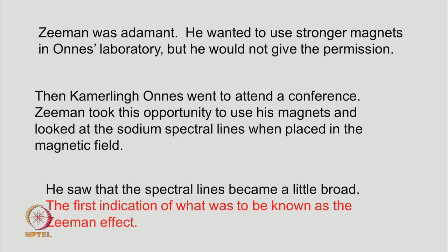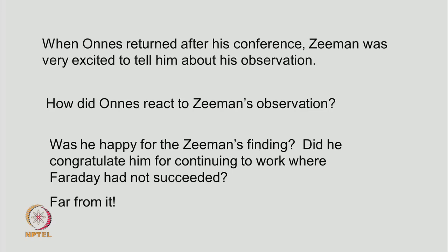So, that is the opportunity that Zeeman took to use his magnets and looked into the spectral lines of sodium atoms and what he saw was that the spectral lines of sodium atom just became a little broad, not a great effect, but just a little broad. So, this was the first indication of what was to be famously known as the Zeeman effect. Owens came back after his conference and Zeeman was very excited to tell him about his observation that here is the sodium lines and there showing some broadness if they are subjected to this magnetic field.